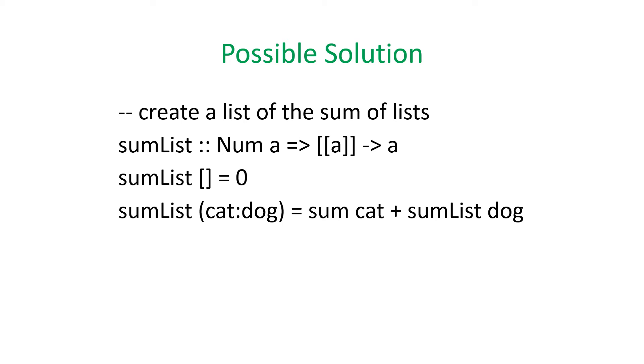Here's a possible solution. The parameters are taking a list of numbers and returning a number. Again, empty list is zero. Then we split the list, if it's not an empty list, into the head and the tail. And then we just simply sum the head, which is the first element that our list of lists would be a list itself. And so we use the sum function to sum all the numbers in the initial list inside the list. And then we call sum list on the rest of it. This makes it a lot easier because you don't have to do the head and tail method calls inside the function definition.